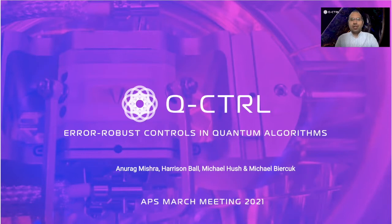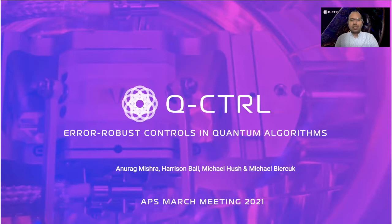The noisy nature of current generation quantum computers makes quantum algorithms that require very low noise, such as Shor's algorithm, impractical. In recent years, hybrid quantum-classical algorithms have emerged as the only practical alternative on these noisy quantum computers. Such algorithms are thought to provide some resistance to specific noises on devices. But how true is this claim with more realistic error models?